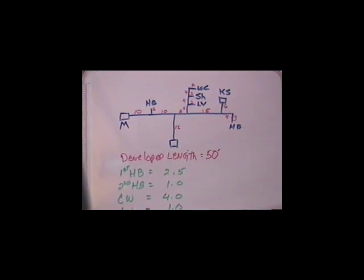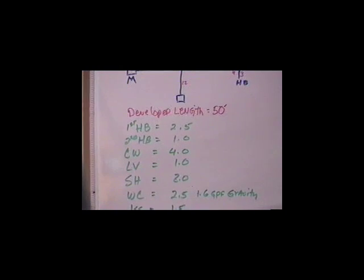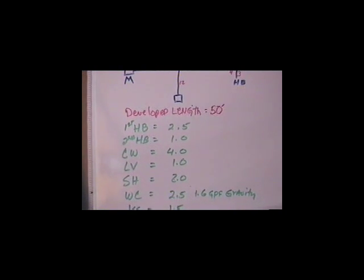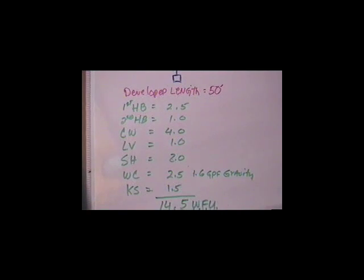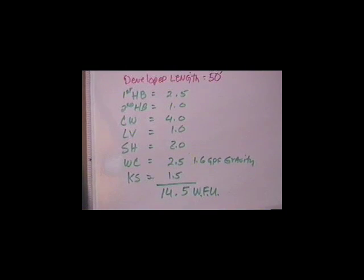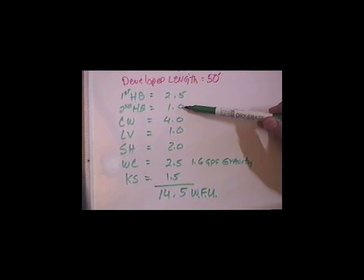The next thing I've calculated here is the water fixture units from table 6-4. The first hose bib is valued at 2.5 water fixture units. For each additional hose bib, it is 1 fixture unit.